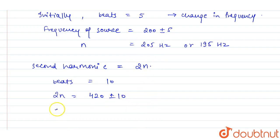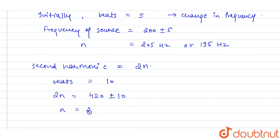So if we solve for n, we get 2n = 420 ± 10, which means n = 210 ± 5. Therefore n can be equal to 205 Hz or 215 Hz.